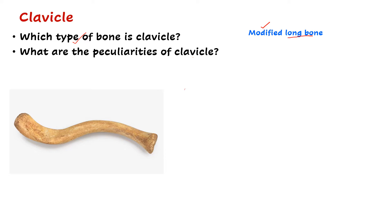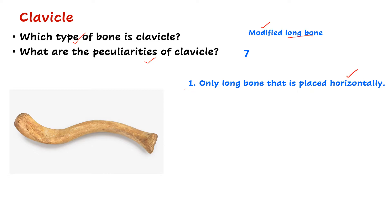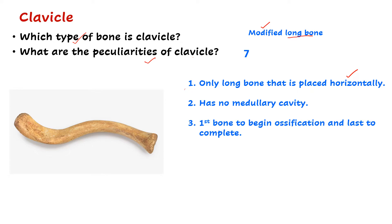The next question asked is what are the peculiarities of the clavicle? There are seven characteristic features or peculiarities of clavicle in total. The first is that this is the only long bone placed horizontally in the body - all others are placed vertically. The second is that it has no medullary cavity. Third, this is the first bone to begin ossification, around the fifth to sixth week of intrauterine life.